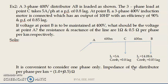The impedance of the distributor per phase per kilometer is given as 1 + j0.5 ohms.